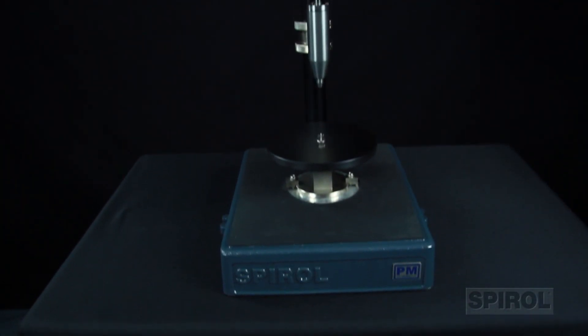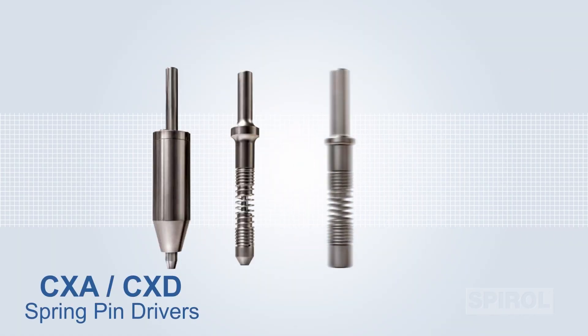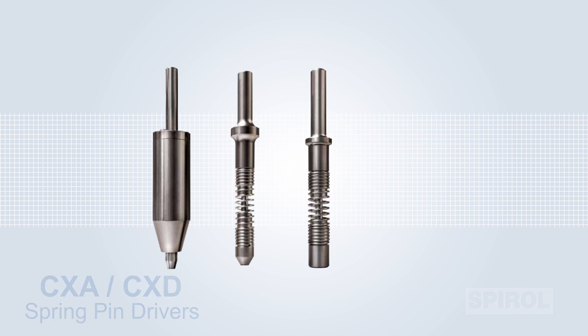The model PM uses Spiral's standard installation tools: the SPD-101 pin driving chuck, the CXA or CXD spring pin drivers, or the pusher punch.